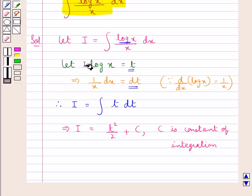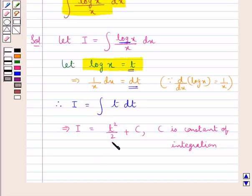Now as we had assumed log x to be equal to t, so in place of t here we put log x. So we get I is equal to log x the whole square upon 2 plus C. Since we have log x is equal to t.